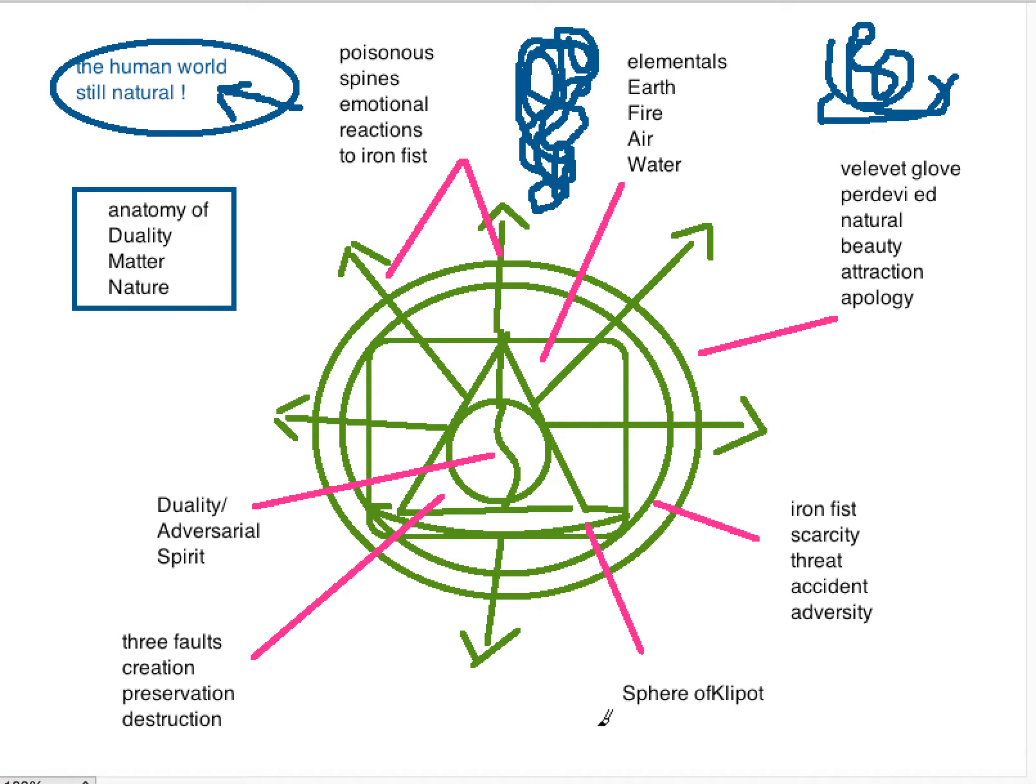So we will look at matter and duality. The first thing we start off with as far as matter is concerned or nature or human nature or the human condition or the condition of the universe is of course represented by this circle with the curve going through it which represents duality and the adversarial spirit.